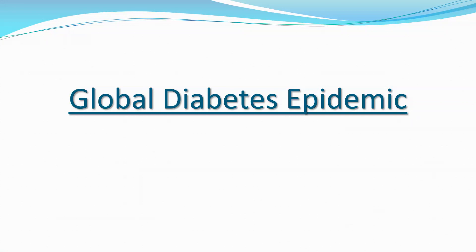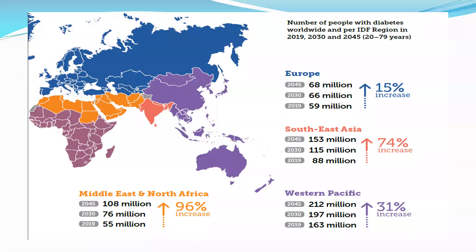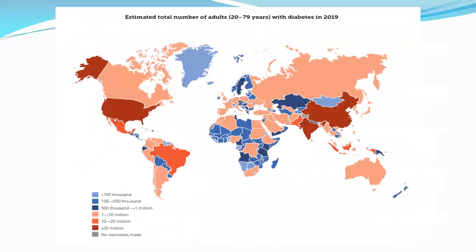Let's look at what is called the global diabetes epidemic or the global burden of diabetes. This diagram represents the number of diabetic patients distributed in the world. Looking at the region of the Middle East and North Africa, by the year 2019 there were 55 million diabetic patients, expected to reach 76 million by 2030 and 108 million by 2045 — a true diabetes epidemic.